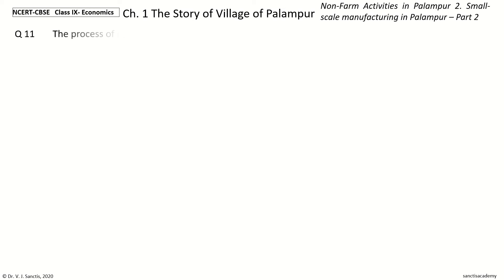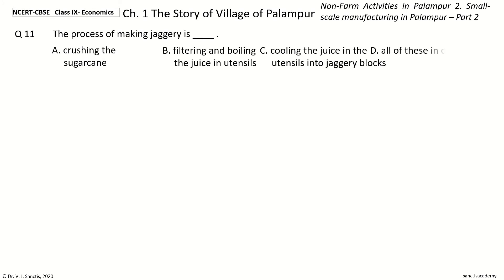Question 11: The process of making Jogari is dash. The options are Crushing the Shurakane; Filtering and boiling the juice in utensils; Cooling the juice in the utensils into Jogari blocks; All of these in order. The answer is All of these in order. So the process is: Crushing the Shurakane, then Filtering and boiling the juice in utensils, then Cooling the juice into Jogari blocks.